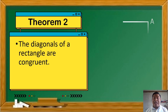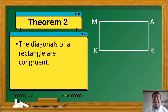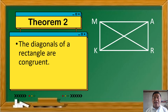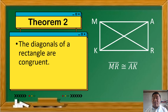So, let's take a look at Rectangle M-A-R-K. Nasaan ba yung mga diagonals natin dyan? We have first diagonal M-R, and the other diagonal is diagonal A-K. So, sabi sa theorem na ito, yung mga diagonals na yan ay congruent to each other — meaning equal ang measurements nila. Kaya, we could say that segment M-R is equal to segment A-K.